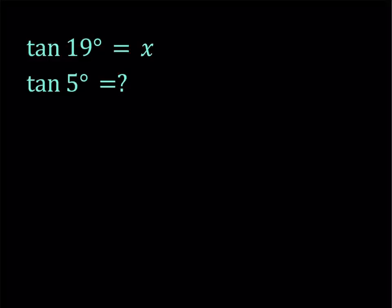We've done problems like this before, and I'll share the links with you so you can look at other problems. We have to establish a relationship between 19 and 5 degrees. I won't always write the degree symbol even though the angles are in degrees — that's understood. So how do we relate 19 degrees to 5 degrees? I'm going to be using the double angle formula and the triple angle formula and a couple other things.